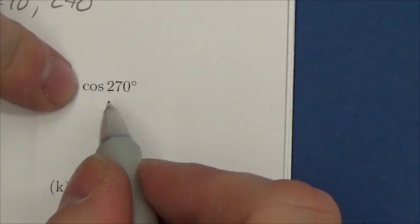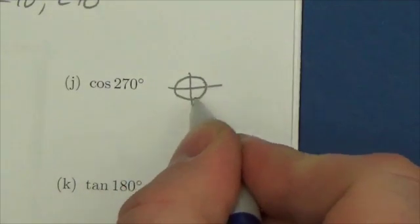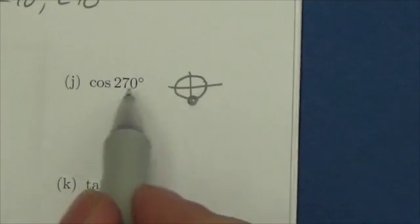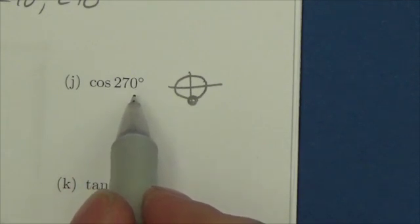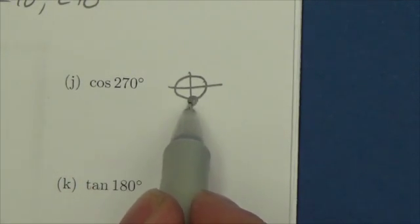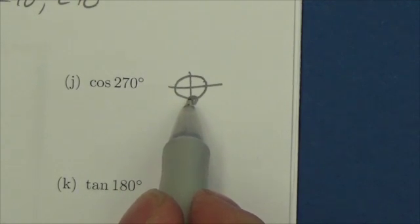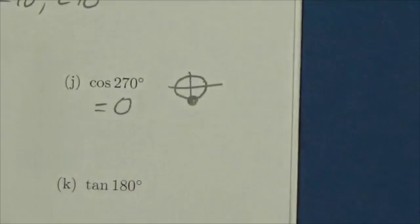Cosine of 270 degrees: 270 is a quadrantal angle on the y-axis. Cosine equals x over r, but at this angle the value of x is zero, so zero over r equals zero. Cosine of 270 equals 0.